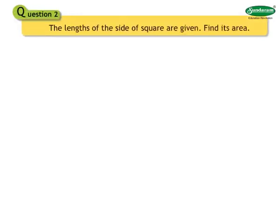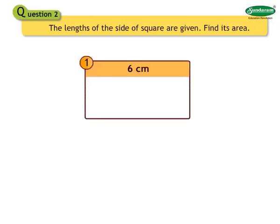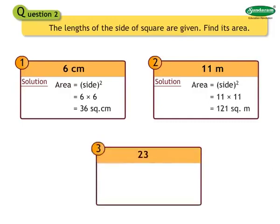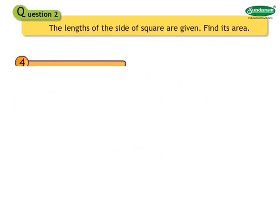Question 2: The lengths of the sides of a square are given. Find its area. Number 1: 6 centimeters. Solution: Area equals side squared equals 6 into 6 equals 36 square centimeters. Number 2: 11 meters. Solution: Area equals 11 into 11 equals 121 square meters. Number 3: 23 centimeters. Solution: Area equals 23 into 23 equals 529 square centimeters.